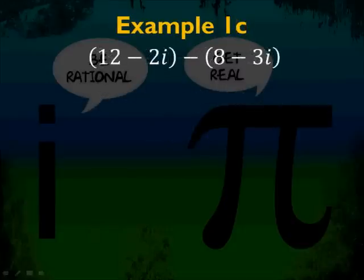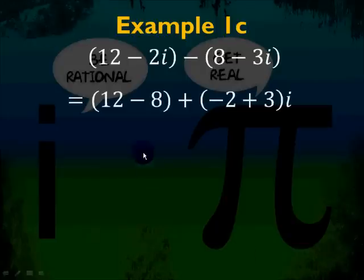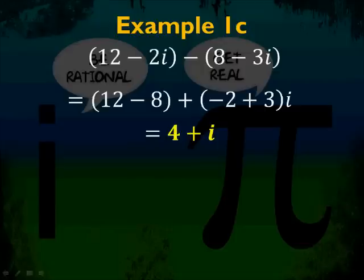For 1c, try it yourself. You get 12 minus 8 plus negative 2i plus 3i, so these get combined, and your answer is 4 plus i. The adding and subtracting part are not that difficult — just make sure you get the signs straight.